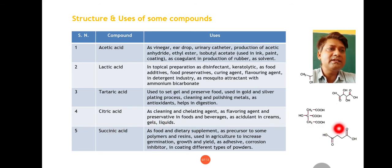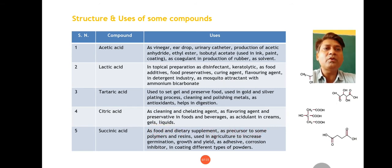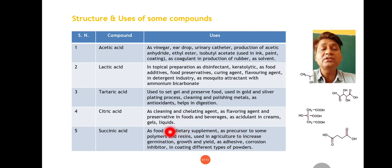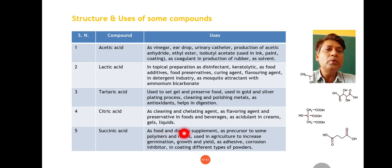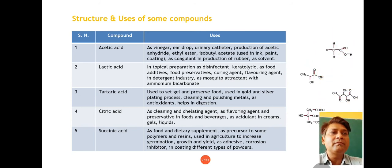Next compound is succinic acid. Succinic acid is used as food and dietary supplement, as precursor to some polymers and resins, in agriculture to increase germination and improve growth and yield, as adhesive, corrosion inhibitor, and in coating different types of powders.